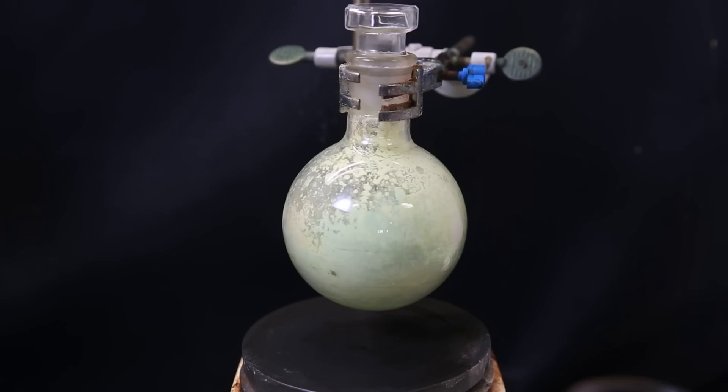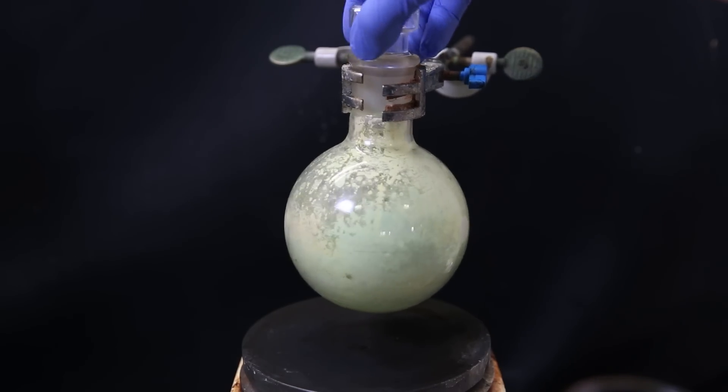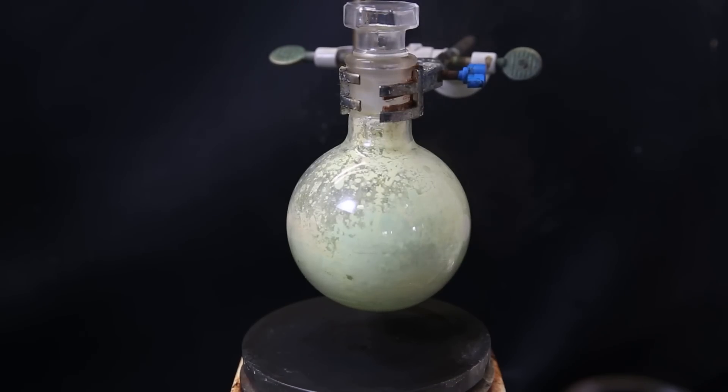After letting the flask sit closed for two days, the color seemed to change dramatically. Uranium tetrachloride reacts with moisture from the air, but it should be very limited in a closed flask, so it probably looks more dramatic than it really is. When I remove the stopper, some hydrogen chloride gas quickly pops out, so for sure a tiny bit has reacted.